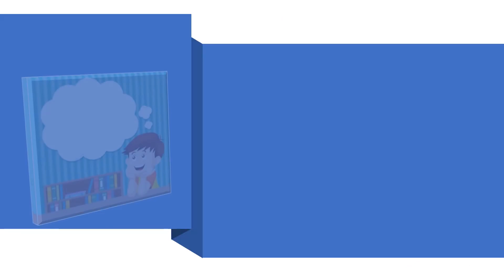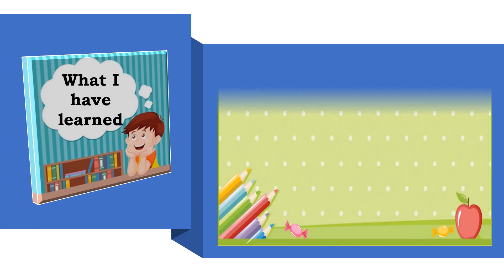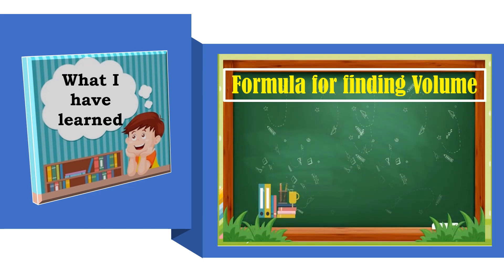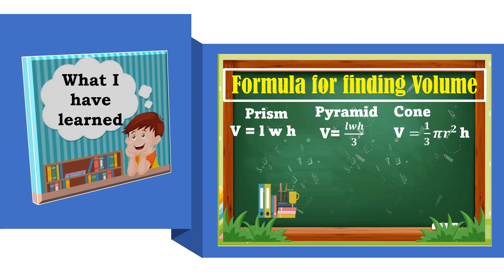Here are the formulas for finding volume: Volume of a prism = length × width × height. Volume of a pyramid = length × width × height ÷ 3. Volume of a cone = (1/3) × π × r² × height. Volume of a cylinder = π × r² × height. Volume of a sphere = (4/3) × π × r³.